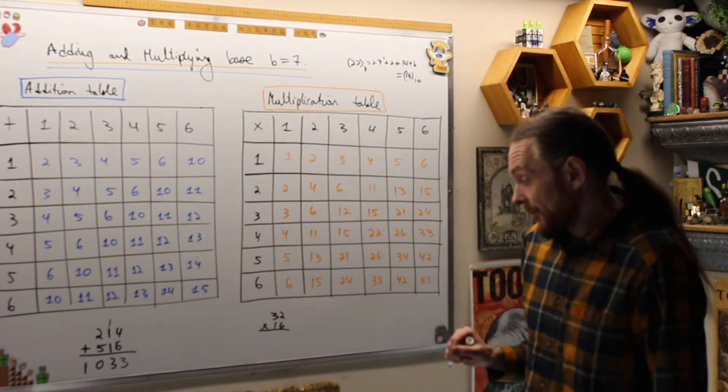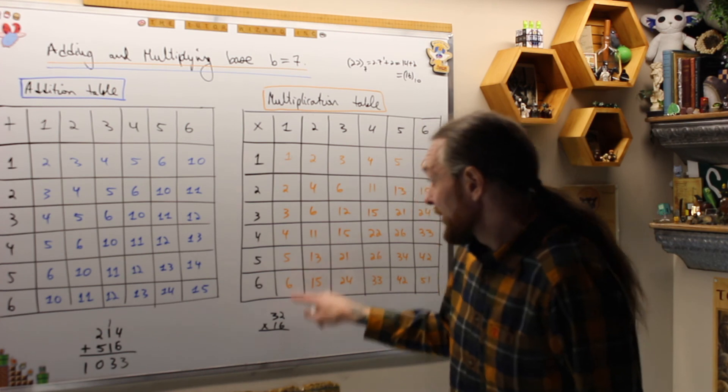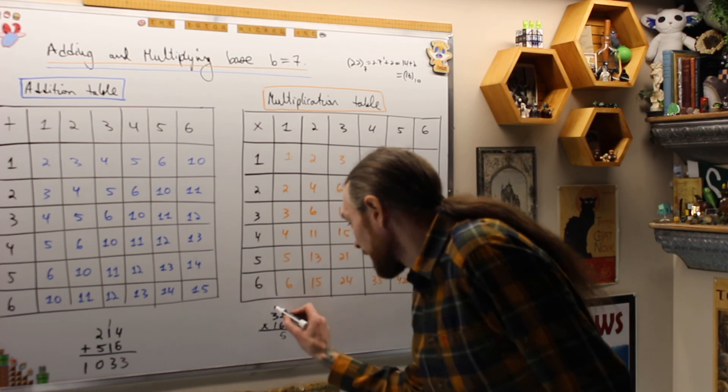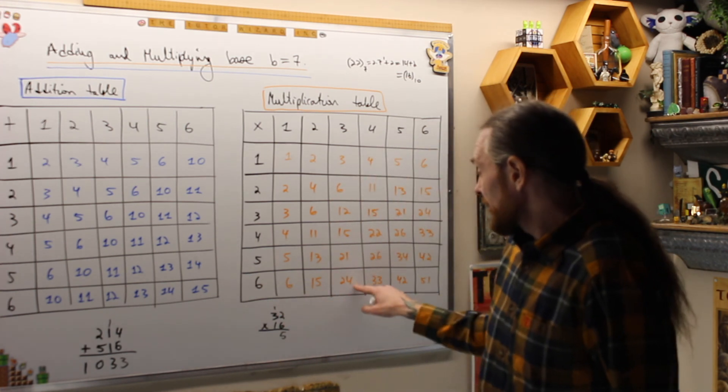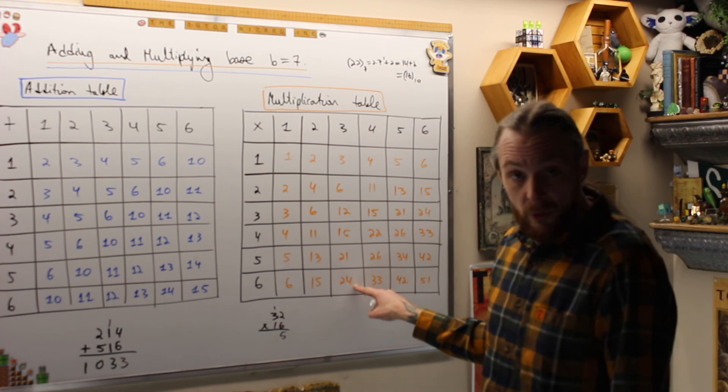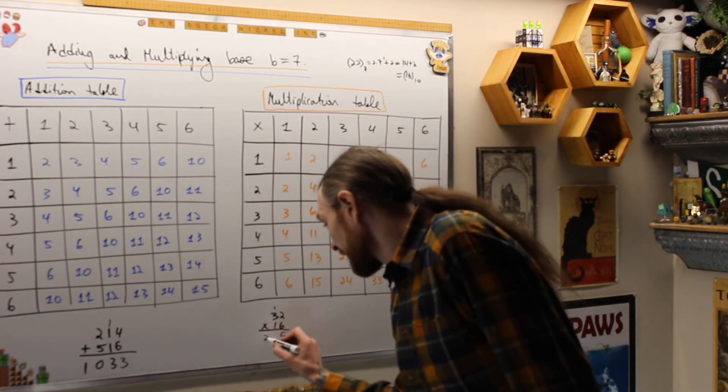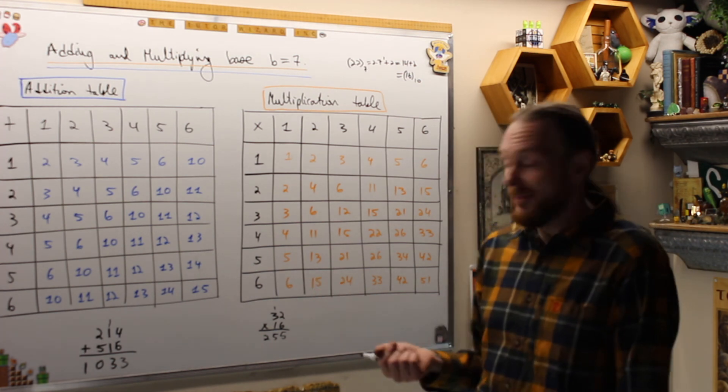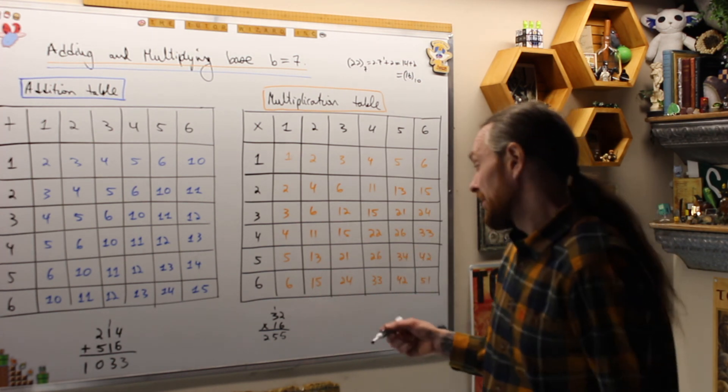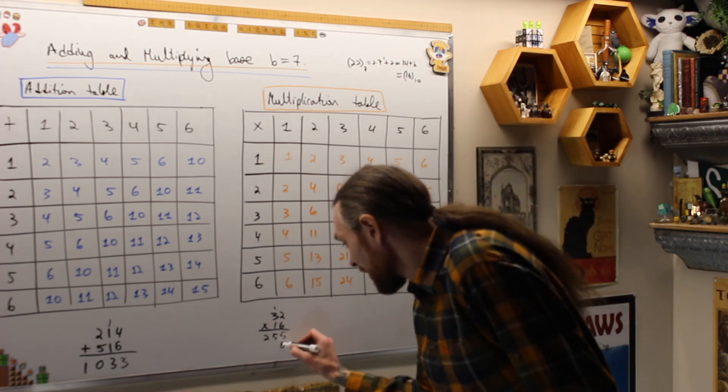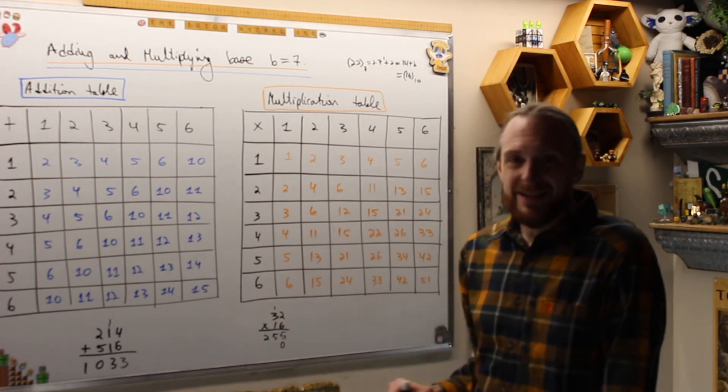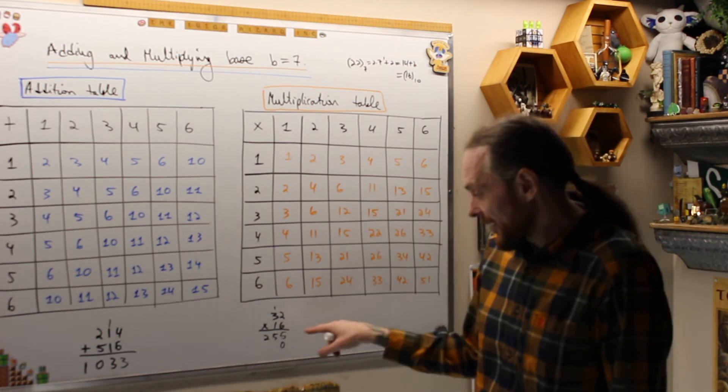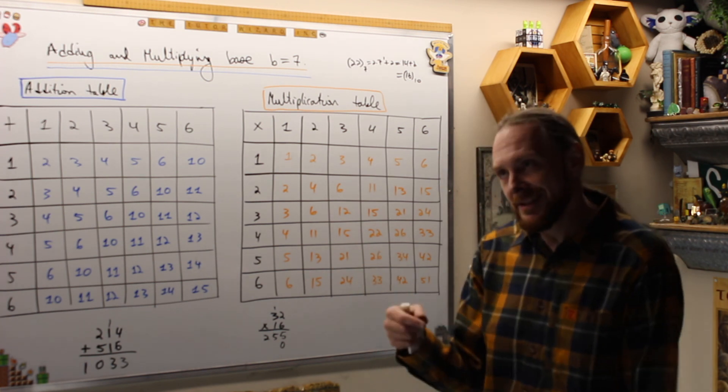Now when I multiply, this gets even worse. So I want to do 6 times 2. 6 times 2 is 15. I carry the 1. 6 times 3 is 24, and then I've got plus 1, so that's going to be 25. And really what that means is 19 in decimal. You have to remind yourself. Now in multiplication, remember, the 1 is now in the power 1 of the 7s, not in the power 0 7s. I want to say the 1s in the 10 spot, but I mean the 1s in the 7 spot.